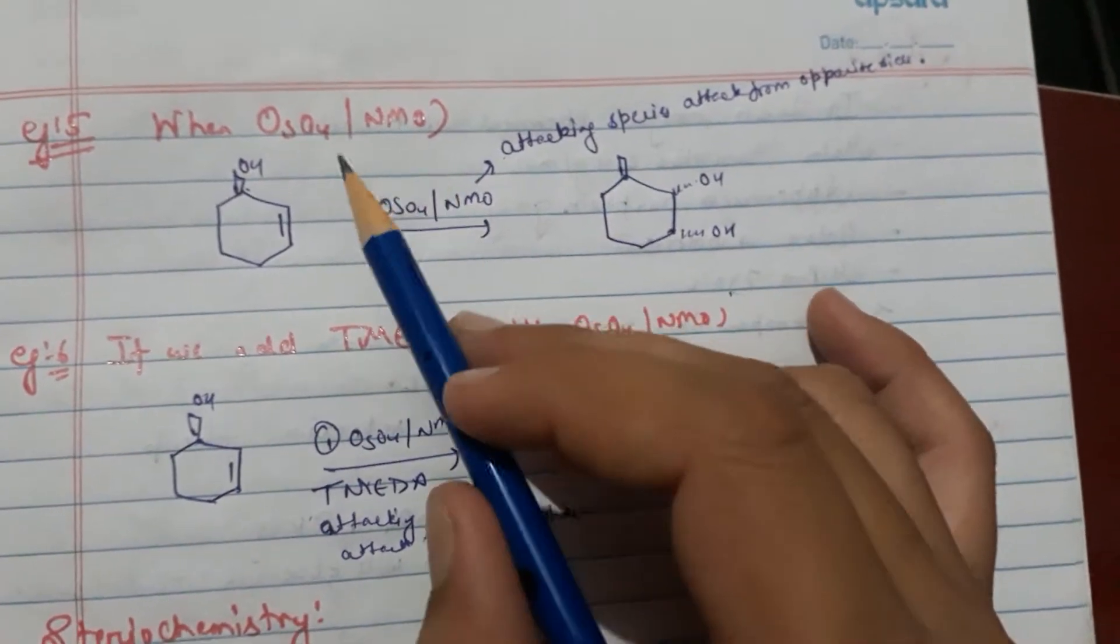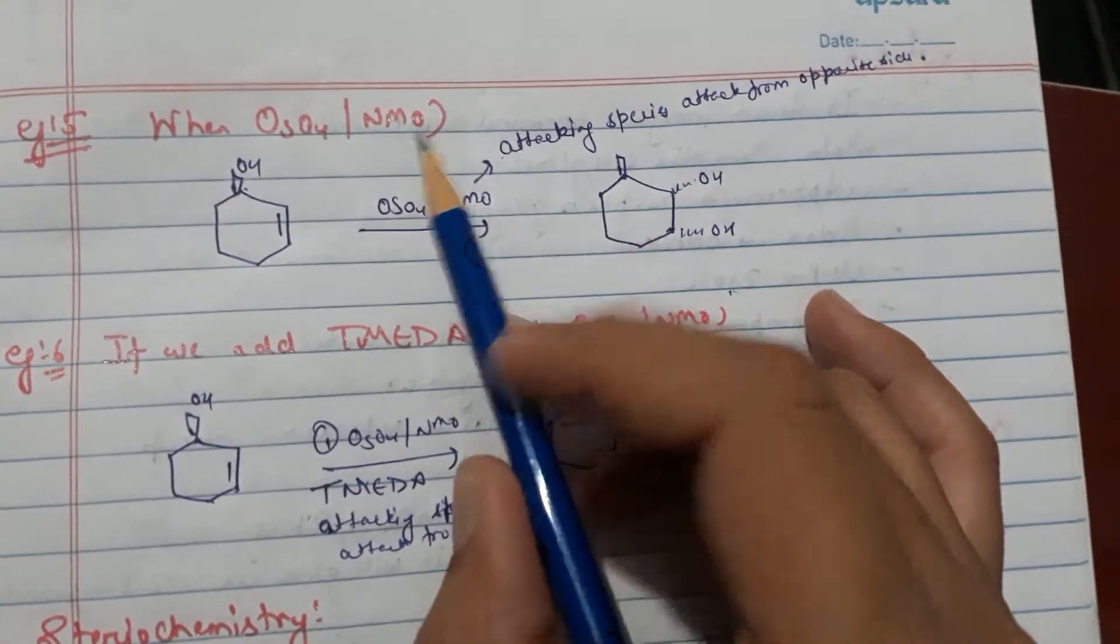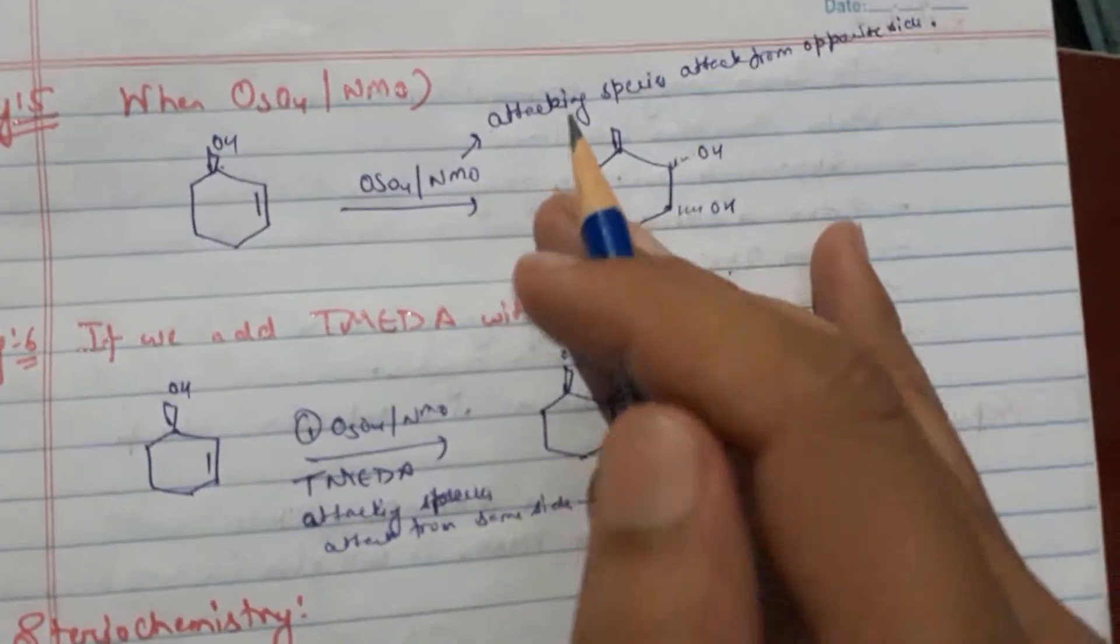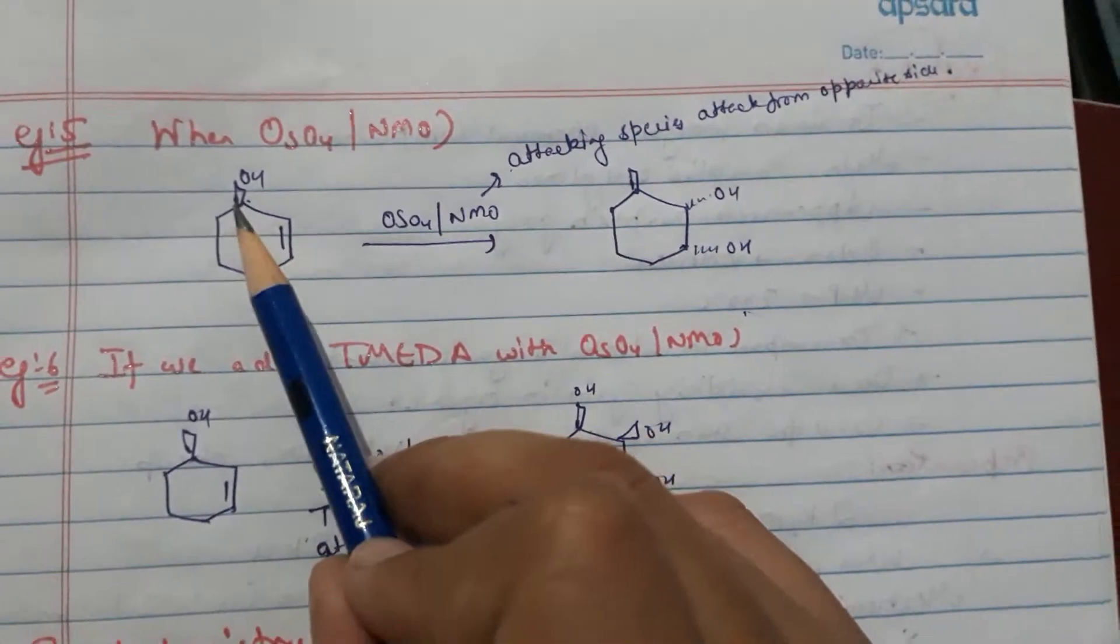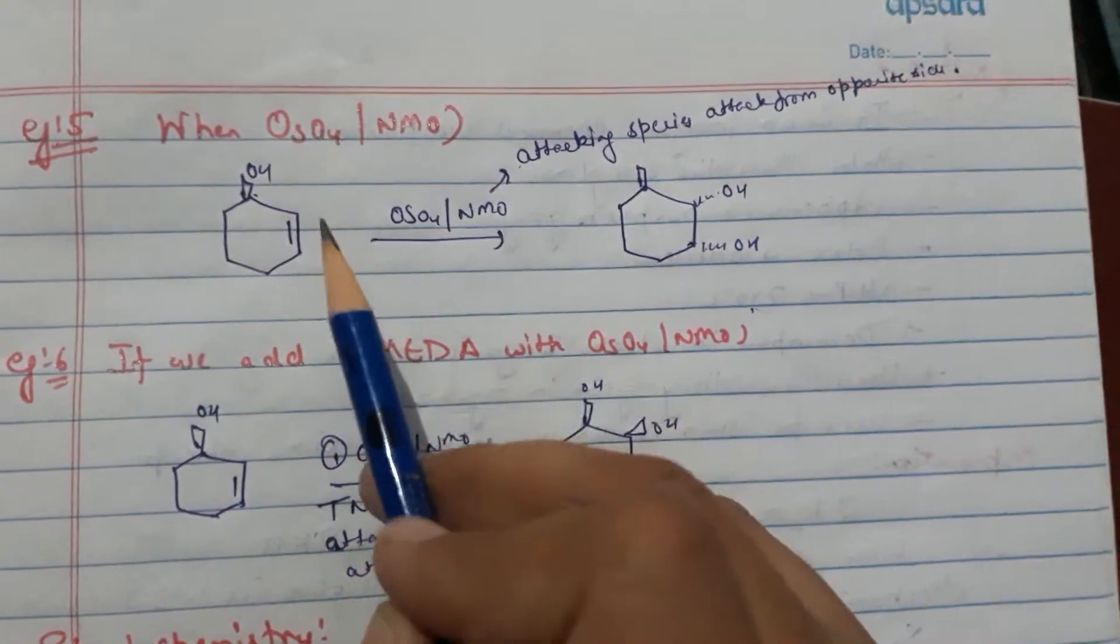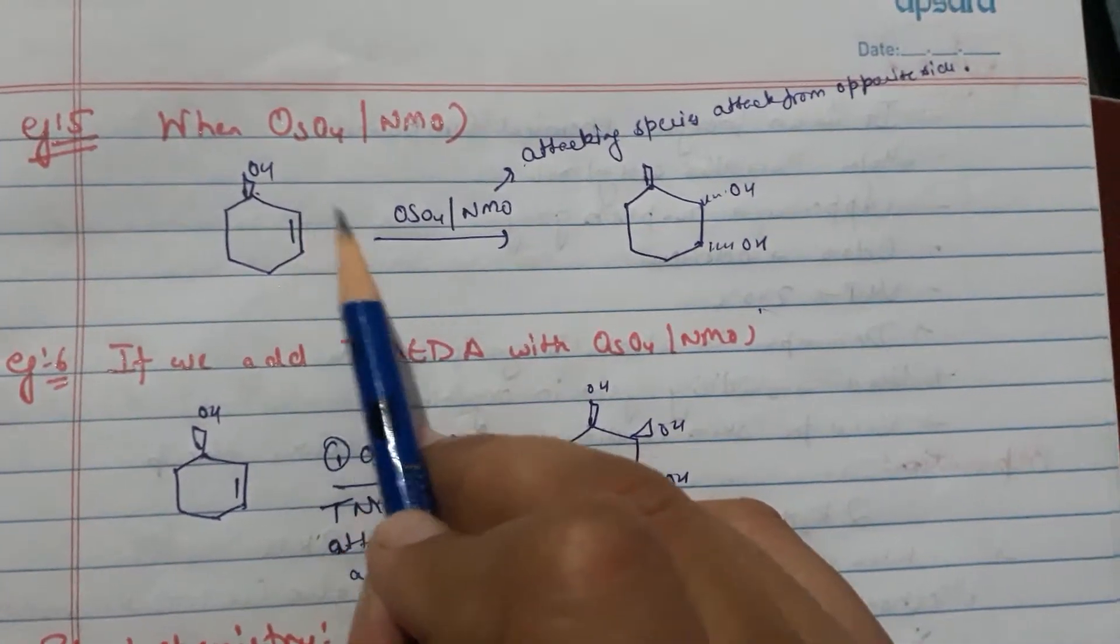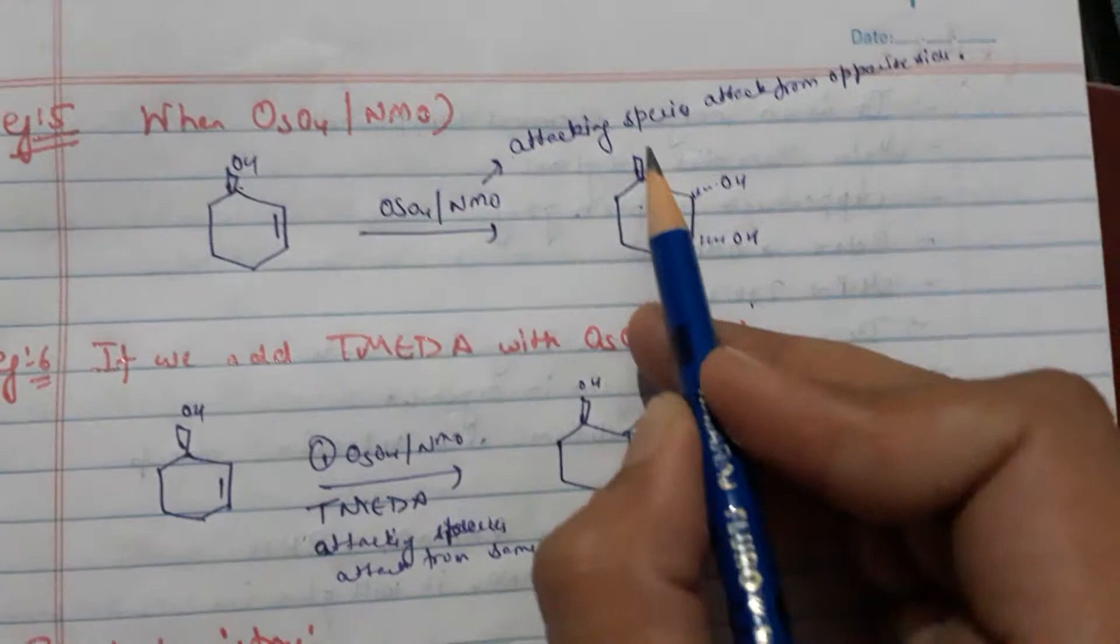Next one, if we add NMO which will make attacking species on opposite to substitution. If substitution present above the plane then opposite species will attack below the plane. So this is the stereochemistry of Osmium tetraoxide.